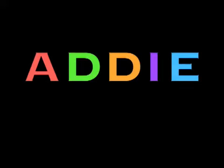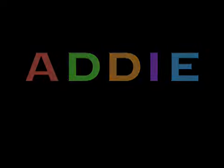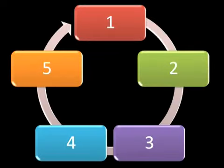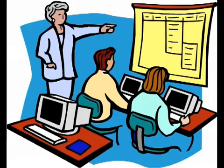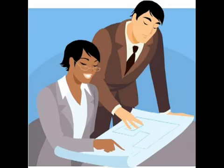ADDIE is the acronym for Analysis, Design, Development, Implementation and Evaluation. It is a five-step model for the process of instruction systems design. Its primary purpose ensures a consistent and systematic process for the design and development of efficient and effective instruction.